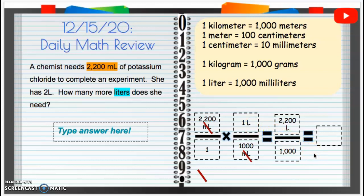Now, we can divide 2,200 divided by 1,000. When you divide that, you will get 2 and 2 tenths liters, so 2.2 liters. All right, so 2.2 liters is how much she needs.